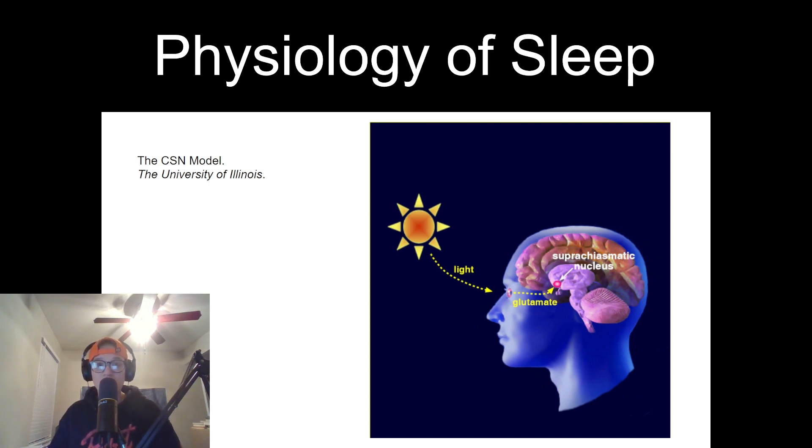REM sleep, also known as paradoxical sleep, is particularly intriguing due to its association with dreaming. Although the exact purpose of dreaming remains speculative, one theory suggests that it may aid in emotional processing and cognitive function. During REM sleep, the brain consolidates emotional experiences, promotes creative thinking, and aids in problem solving.